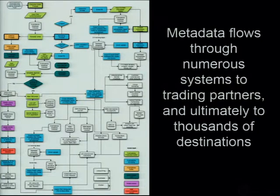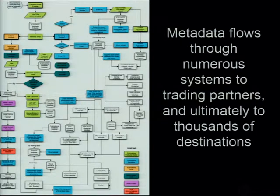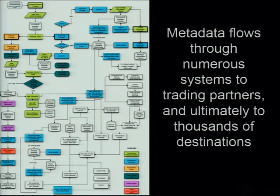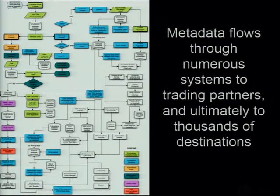A good way to start is by mapping your metadata process. I don't know how many of you might be familiar with Six Sigma, a kind of process improvement methodology, but this is a metadata flowchart, and it looks complicated — because it is complicated. This shows different containers, when data is going into them, who's handling it, what parts of the organization are touching it, and where it's going. And this includes e-book metadata, library metadata, and retailer metadata.